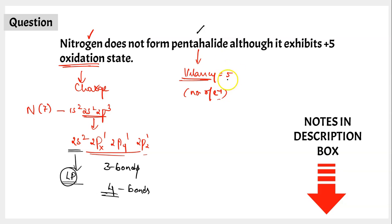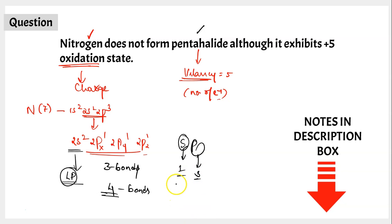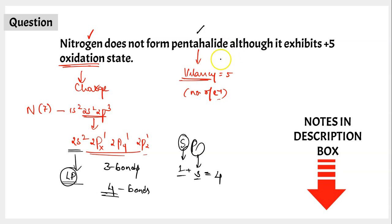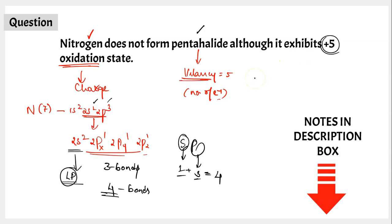Because nitrogen does not have any vacant orbitals in its valence shell, it can only form 4 chemical bonds and cannot form pentahalide, which requires 5 bonds. Nitrogen has only 2 shells — in the second shell there is 1s orbital and 3p orbitals, giving 4 atomic orbitals available for bonding. As for oxidation state, all 5 valence electrons (2s and 2p) can be lost, giving +5 — but oxidation state and valency are not always equal.